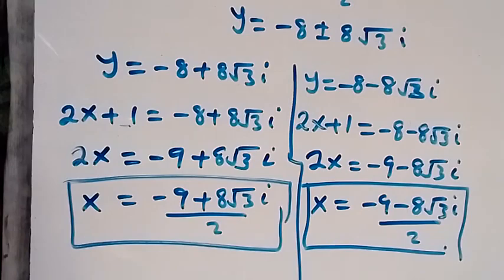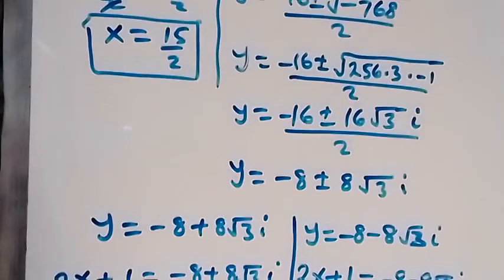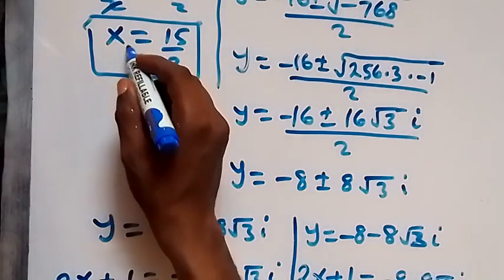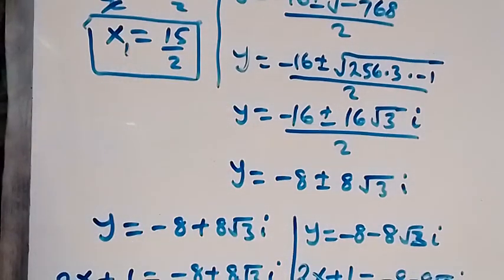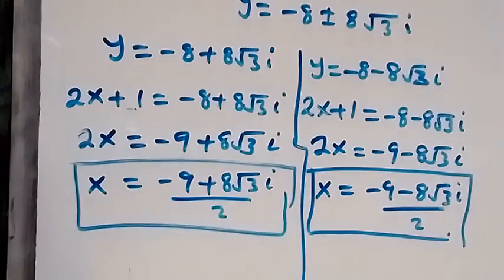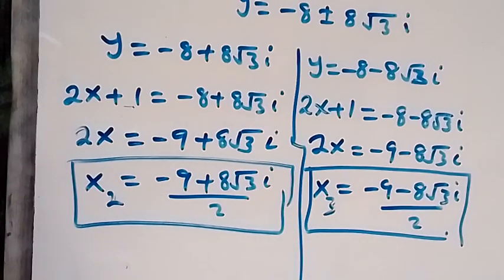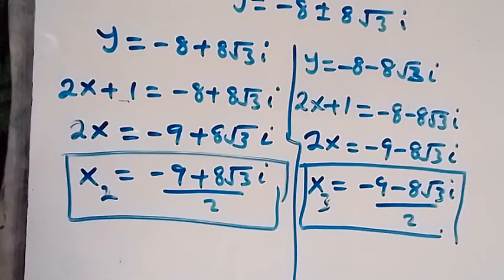So we have three values of x. The real solution is x₁ equals 15 over 2. The two complex solutions are x₂ equals (minus 9 plus 8√3·i) over 2, and x₃ equals (minus 9 minus 8√3·i) over 2. Thank you for watching — please share this video, subscribe to my channel, give a thumbs up, put your comment in the comment section, and see you in the next class. God bless you.